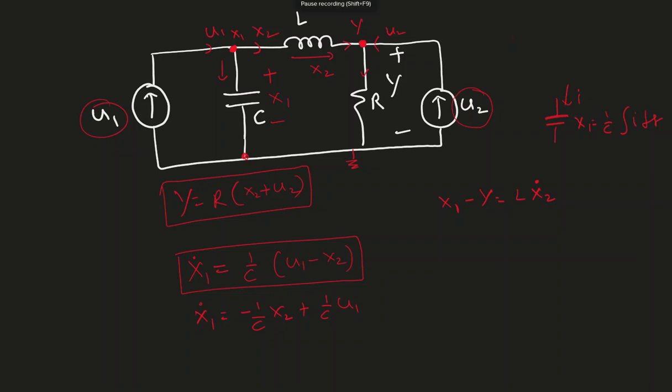I already know what is Y, so I am going to replace Y there. L X2 dot equal to X1 minus R times X2 minus R times U2. So X2 dot equal to 1 over L X1 minus R over L X2 minus R over L U2. This is my X2 dot.